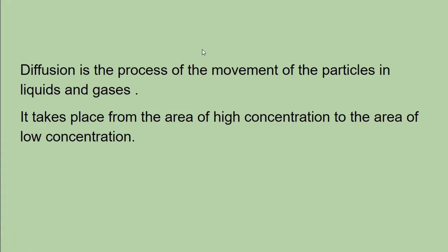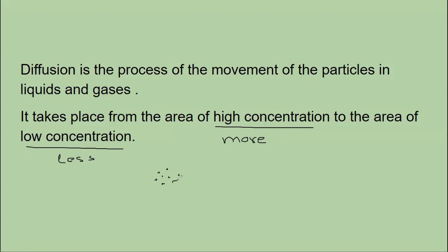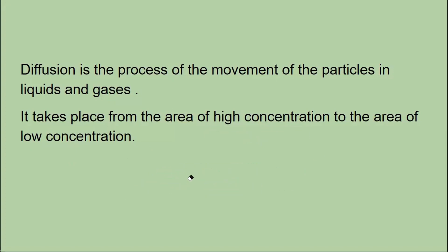Diffusion is the type of movement in which particles move from an area of higher concentration towards lower concentration. The area where particles are more — that is high concentration — they will move towards the area where particles are less. The diffusion of particles keeps on taking place until the two areas become equal in concentration.